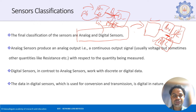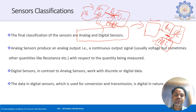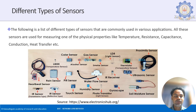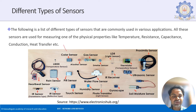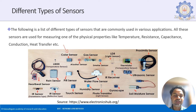Most sensors purchased in the market fall under the passive type, requiring an additional power supply. Now, looking at different types of sensors: first is the color sensor, which measures different colors as a physical quantity and tells you what color is present.